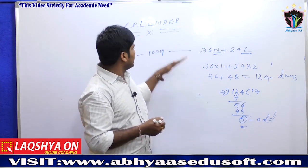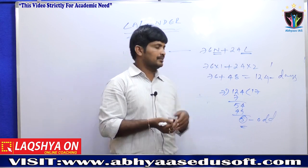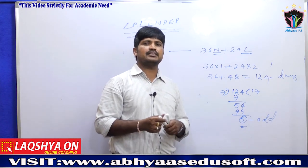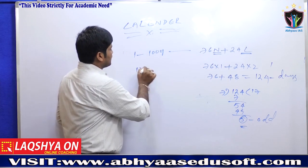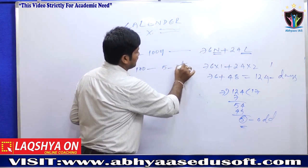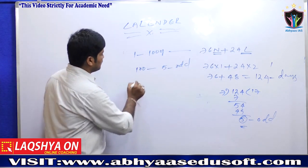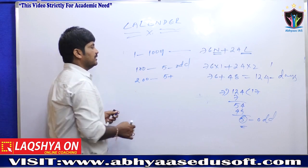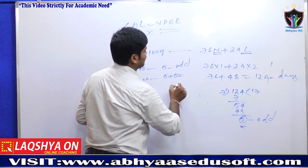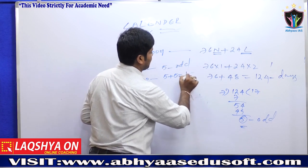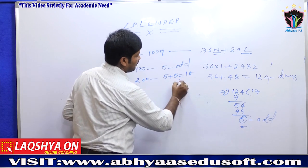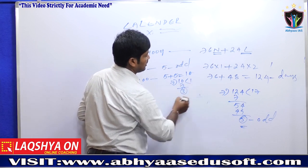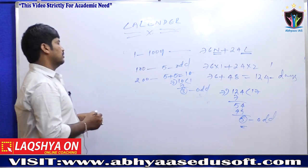Based on this, every 100 years consists of 5 odd days. For 200 years, we have 5 + 5 = 10 odd days. Dividing 10 by 7 gives a remainder of 3. So 200 years consists of 3 odd days.